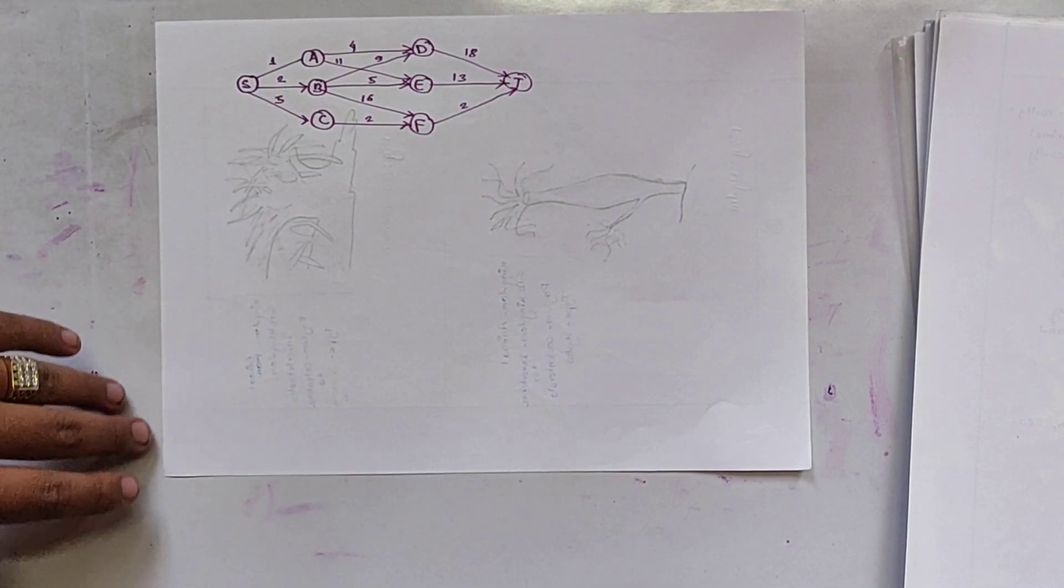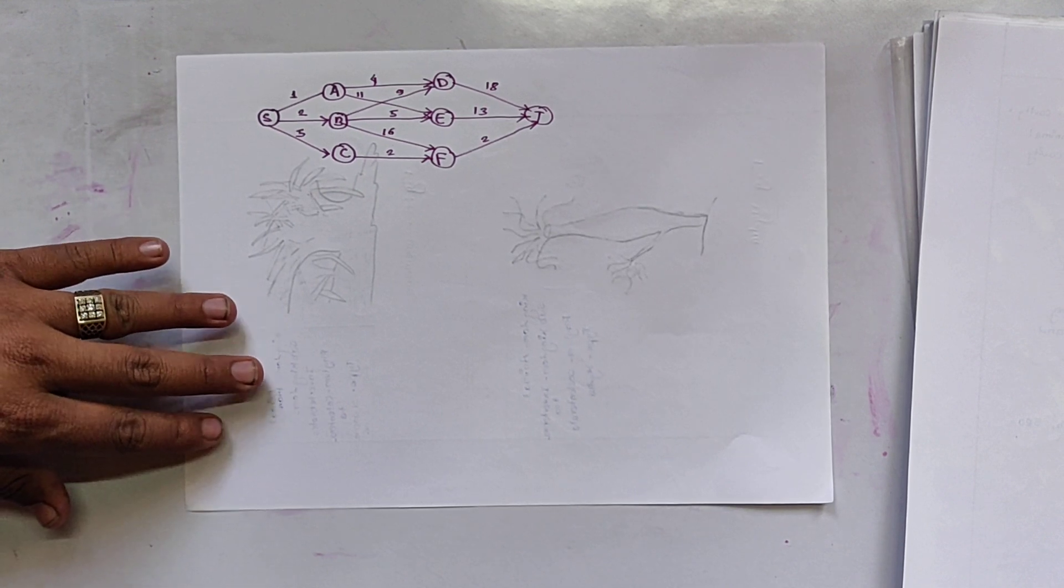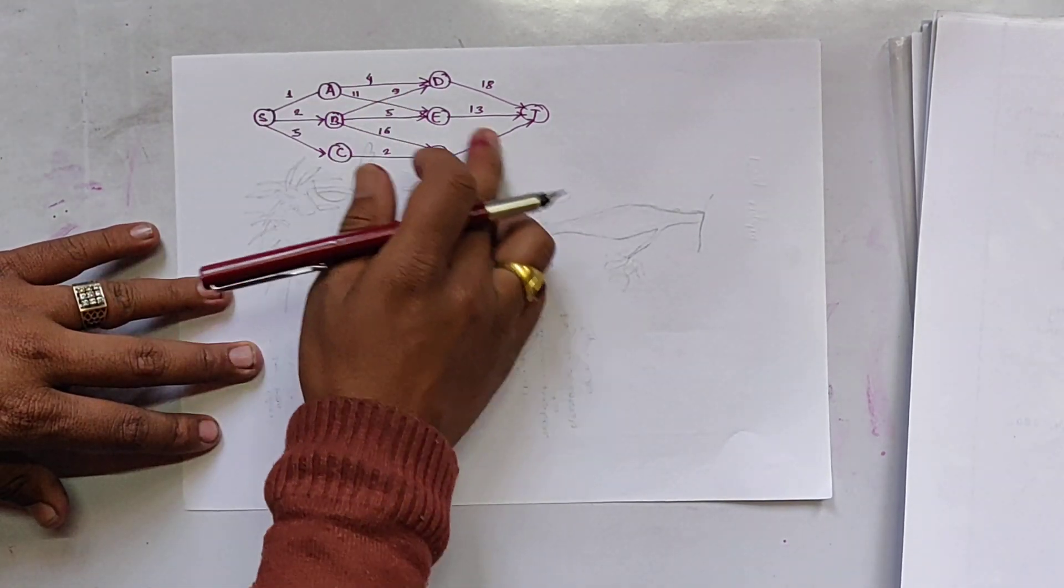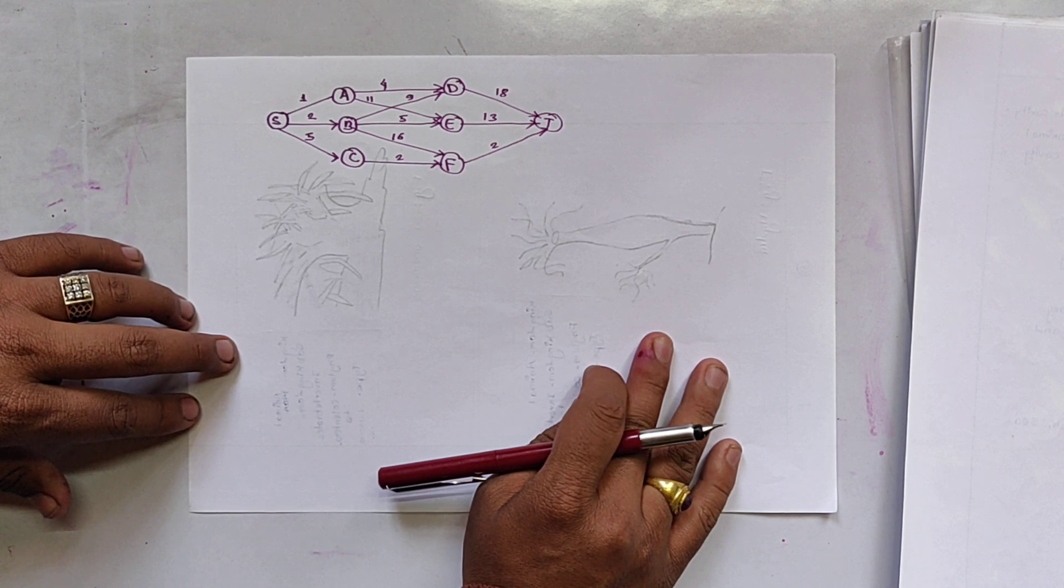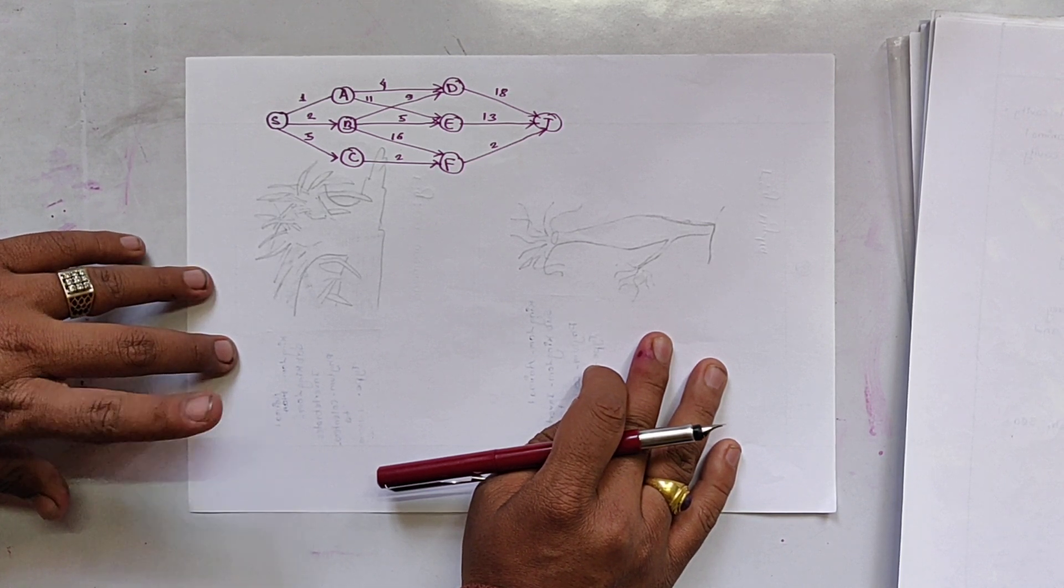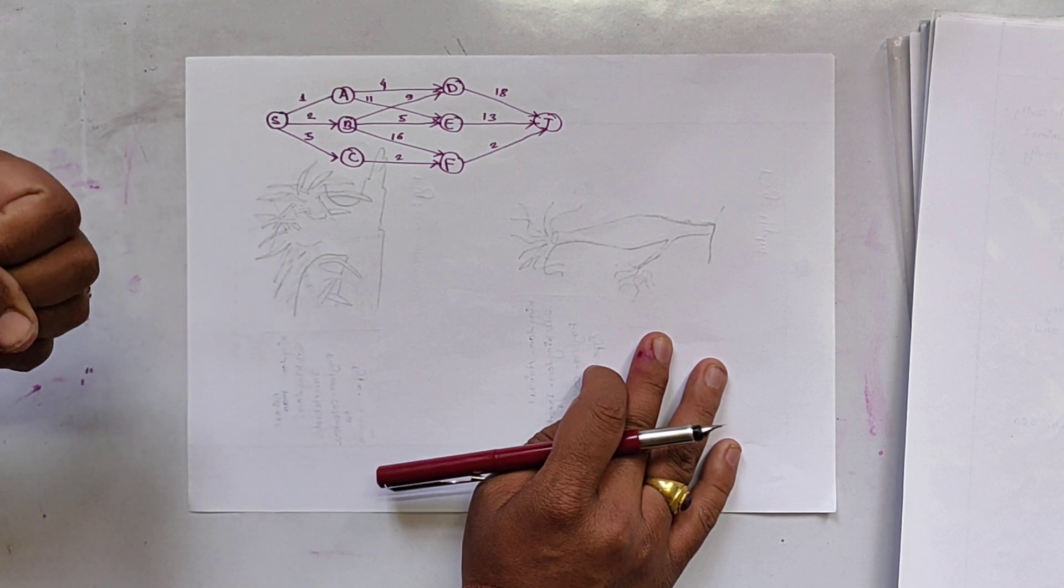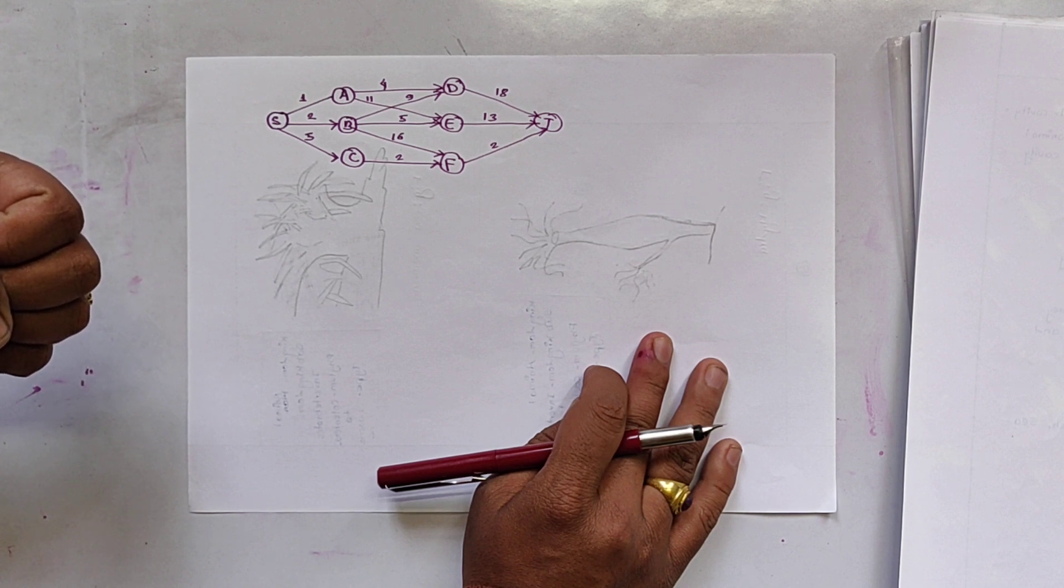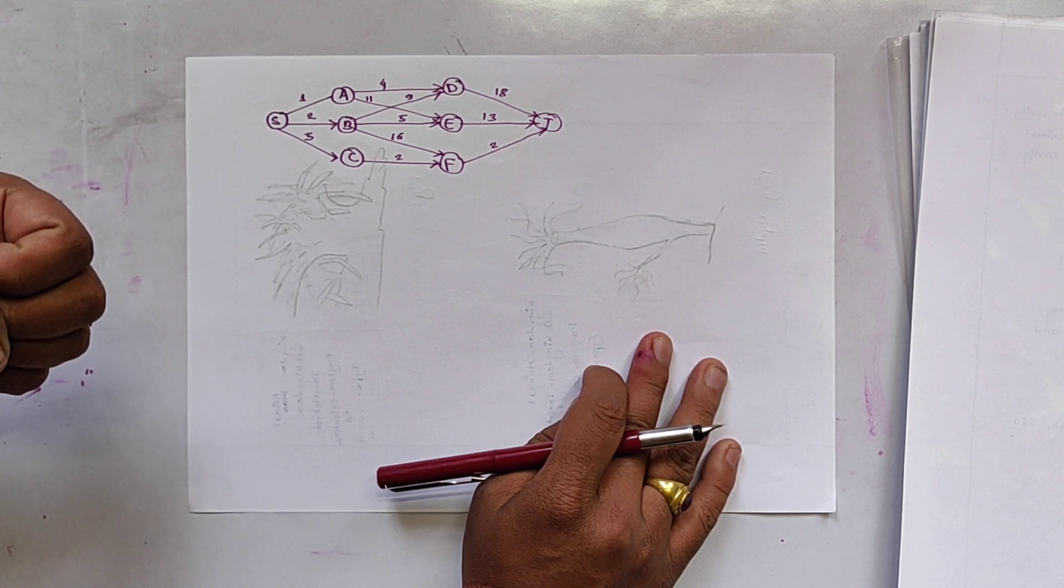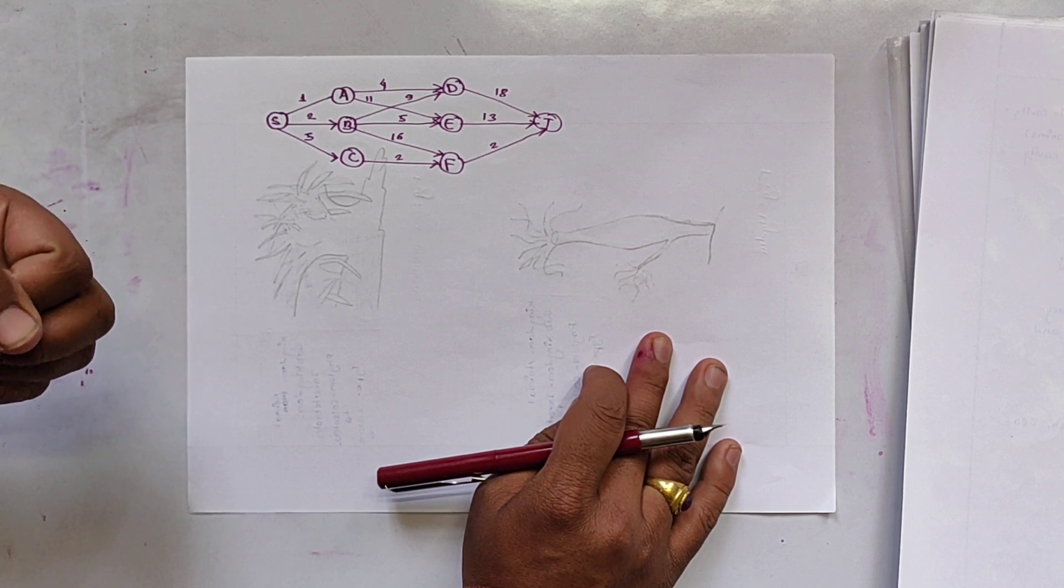Namaste. In this video, we will be solving this multistage graph by using dynamic programming. In dynamic programming, multistage graph is solved by using two approaches. They are forward approach and backward approach. Forward approach is also known as backward chaining and backward approach is also known as forward chaining.